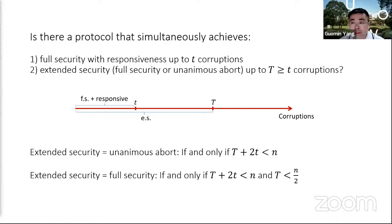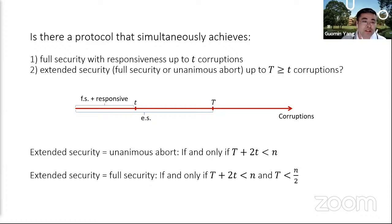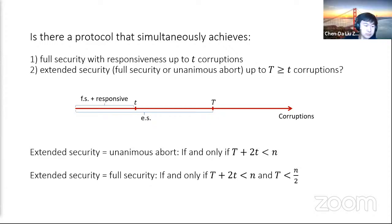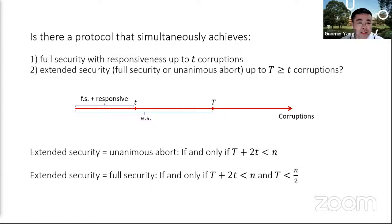If you're aiming for selective abort or some weaker notion of security, do you still need T plus 2t smaller than N, or can you relax that condition? That's a very good question. The impossibility result really uses the fact that everyone obtains the same output. The best one can get is probably T plus small t smaller than N, which I believe comes from one of the best of both worlds papers, but maybe one can do better than T plus 2t — we don't know.